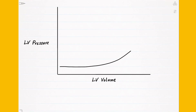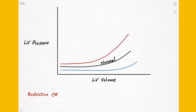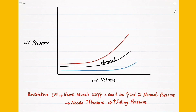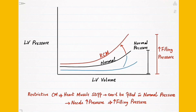Some questions test you on a pressure volume loop by giving only the filling curve and asking which way it shifts under a certain condition. For example, in restrictive cardiomyopathy the heart muscle becomes stiff, making it difficult to fill with blood — we need a higher pressure to fill the left ventricle. So restrictive cardiomyopathy has high filling pressures, which shifts the curve upward. The downward shifted curve represents conditions that result in reduced filling pressures.